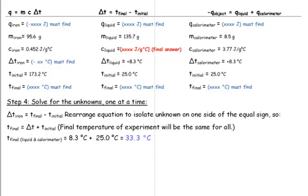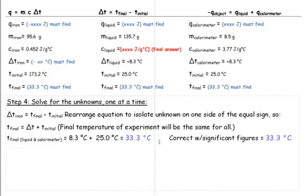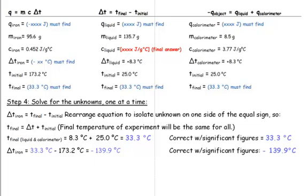At this point, we're at the end of a step, and we're going to make sure that that number is correct in terms of significant figures. Both of the numbers we're dealing with are precise to the tenths place, and we are adding, so our final answer needs to be precise to the tenths place. I have transferred that answer up into the table, and now we can solve for the change in temperature of the iron by taking the final temperature minus the initial temperature. Notice it is a negative sign, because the iron is losing heat, therefore losing temperature. At the end of each step, apply the significant figure rules.